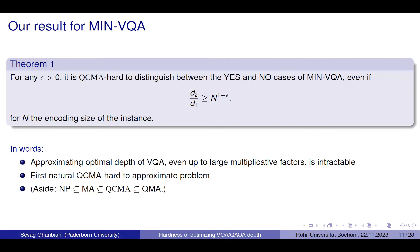The main result we show is that this problem is hard — but maybe surprisingly hard. It's harder than NP-hard; it's what we call QCMA-hard. Even if the ratio between the two depths is basically the input size — n to the 1 minus epsilon for any epsilon — even then you can't distinguish the two cases, even when they're so far apart. This gives us the first natural QCMA-hard-to-approximate problem. QCMA is, of course, harder than NP but easier than QMA.